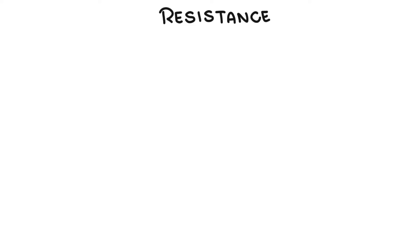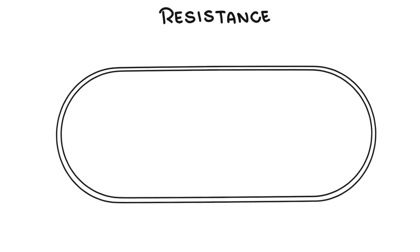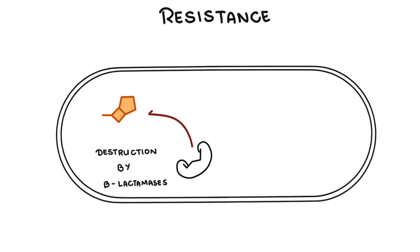Penicillins and other antibiotics inhibit and kill bacteria when people are sick. However, bacteria are also very smart because they have certain enzymes and properties that allow them to resist certain antibiotics such as penicillins. Bacteria may become resistant to penicillins through a number of mechanisms. First, through the destruction of the actual antibiotics by enzymes called beta-lactamases. This is the most common way bacteria inhibit penicillin function.